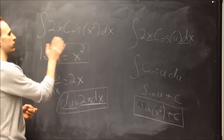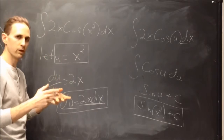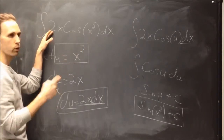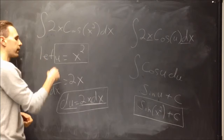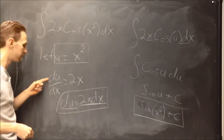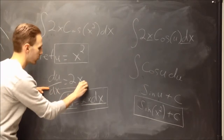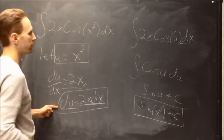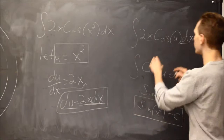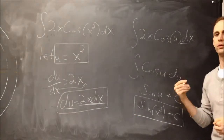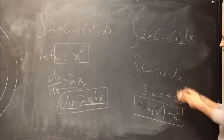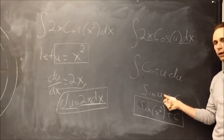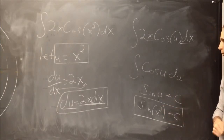To recap: first, find something in the integrand whose derivative is also in there — that's what to make u. Differentiate it; I always immediately write du = [derivative]·dx. Then temporarily rewrite the integral, substitute in u, get rid of the remaining x's and dx by converting to du. Anti-differentiate the simpler u integral, then as the final step, go back to the x variable. The problem is done.